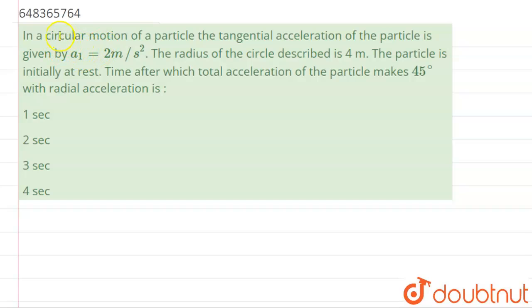Hello students, now we're going to see this question. The question says that in the circular motion of a particle, the tangential acceleration of the particle is given by a₁ equals 2 meter per second square. The radius of the circle described is 4 meters. The particle is initially at rest. Time after which total acceleration of the particle makes 45 degrees with the radial acceleration.